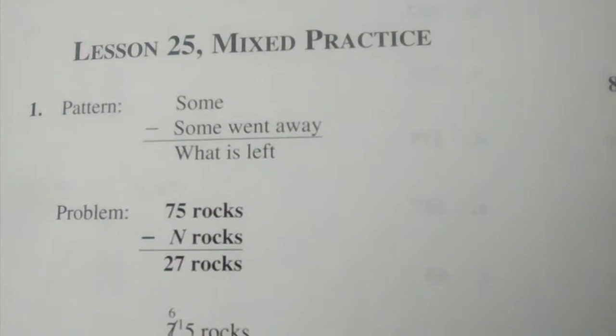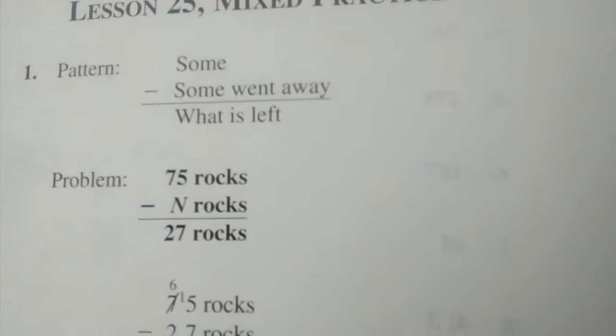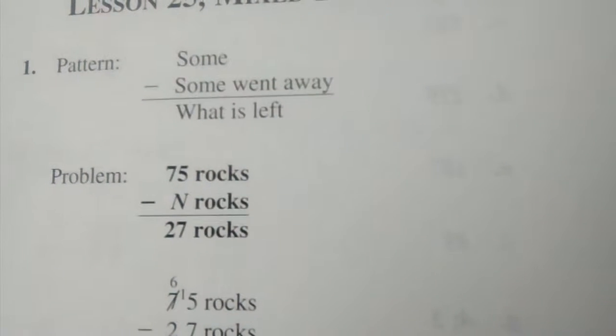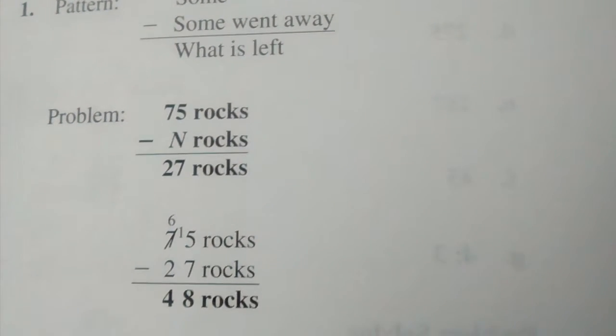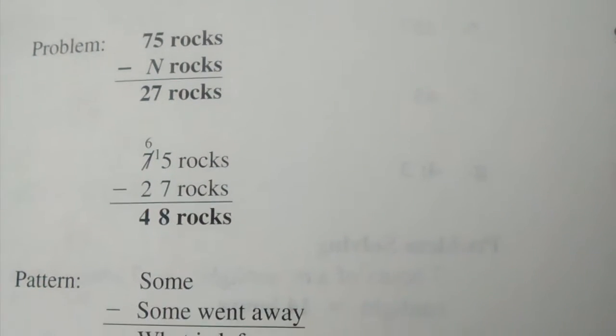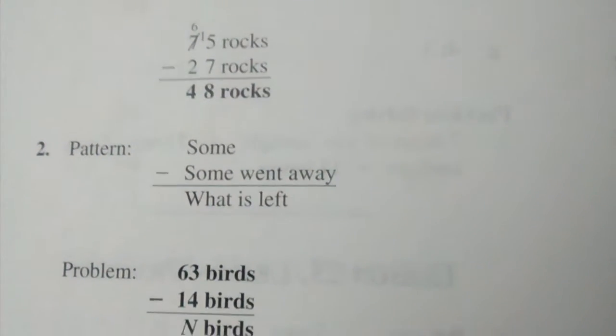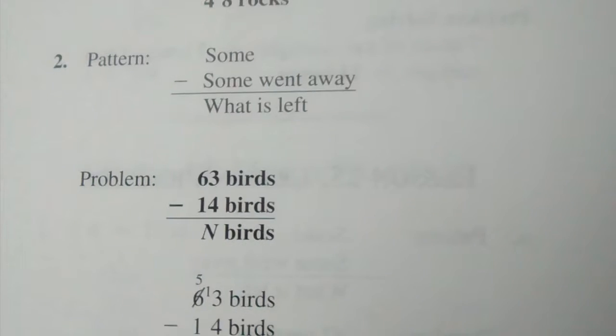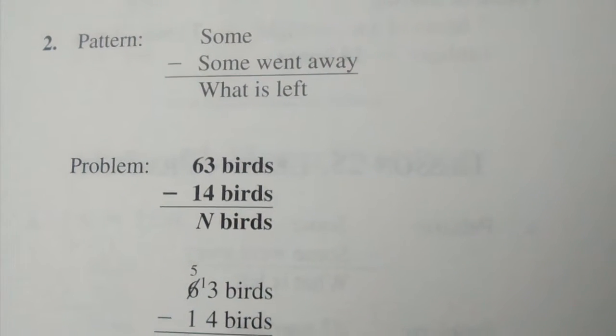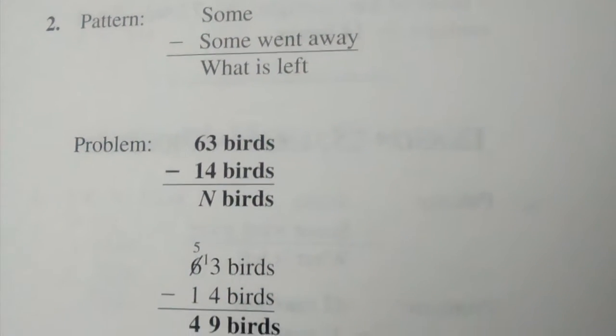Lesson 25. Number 1: 75 rocks take away N rocks equals 27 rocks, 48 rocks. Number 2: 63 birds take away 14 birds equals N birds, 49 birds.